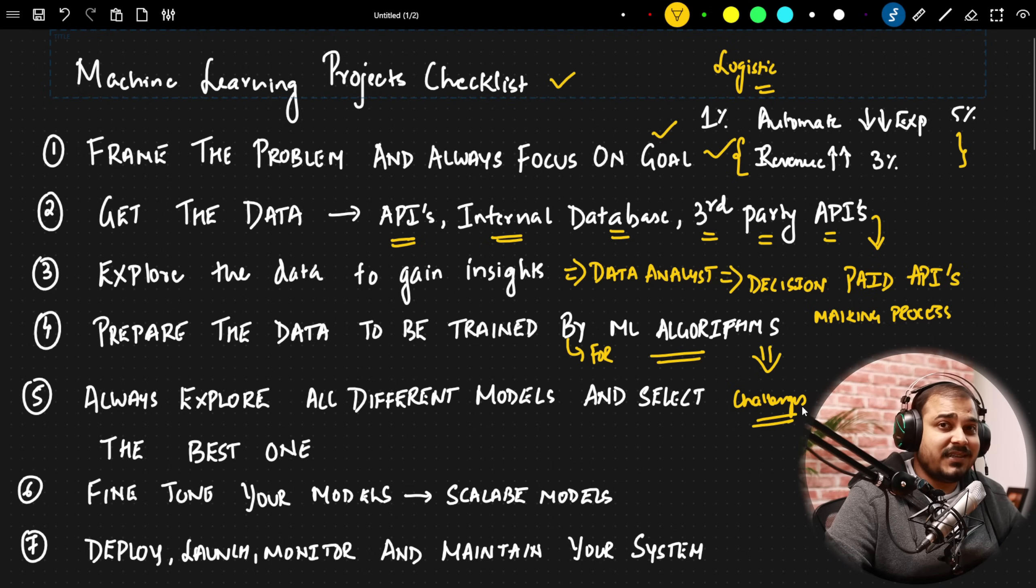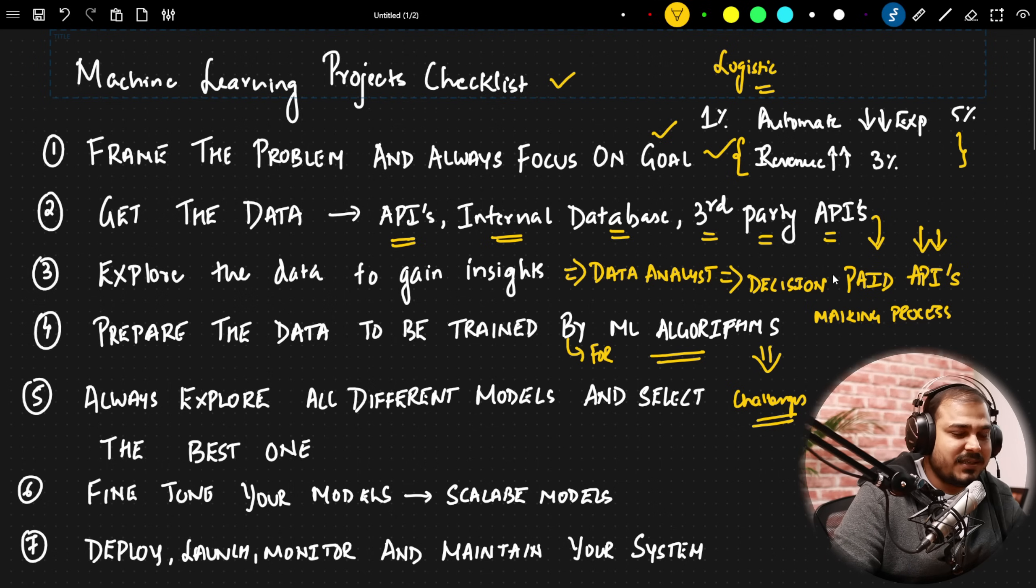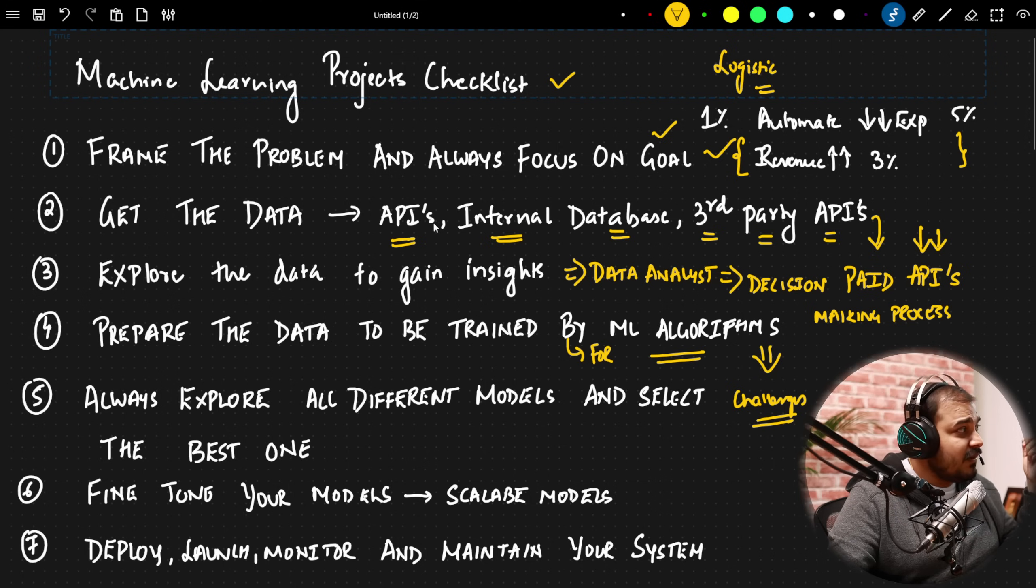Because there may be instances, in the first instance, you may not understand what that data is all about. Because getting the data from the APIs also will not be that good quality, unless and until it is from some kind of paid APIs. If there is some data that is available within the company itself, it may be a good quality data. But there are a lot of chances that you may not be getting a good quality data. At each and every step, you should definitely talk about the challenges. And this thing, when you are also creating your machine learning project, I have kept this as in a checklist. Because that should always be as a reminder in your mind.